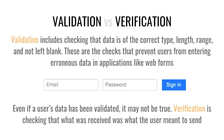Validation is that initial check, but let's say a user enters a phone number that is the correct type, correct length, and in range — but when they send it through, they've accidentally typed a two instead of a one. How can we make sure we received what they meant to send, or that they told the truth? That's verification. Verification is checking that the data received is what was actually meant to be sent.